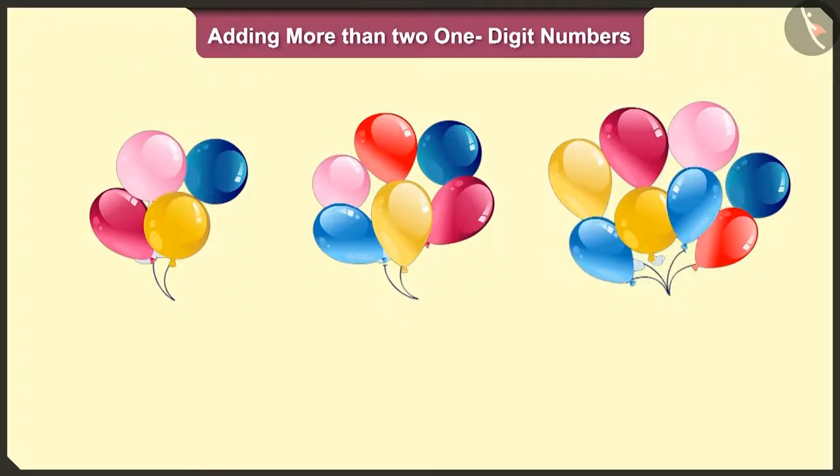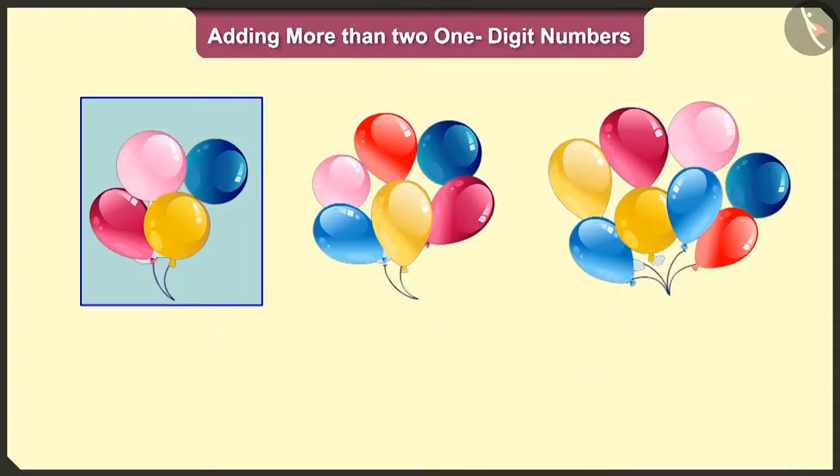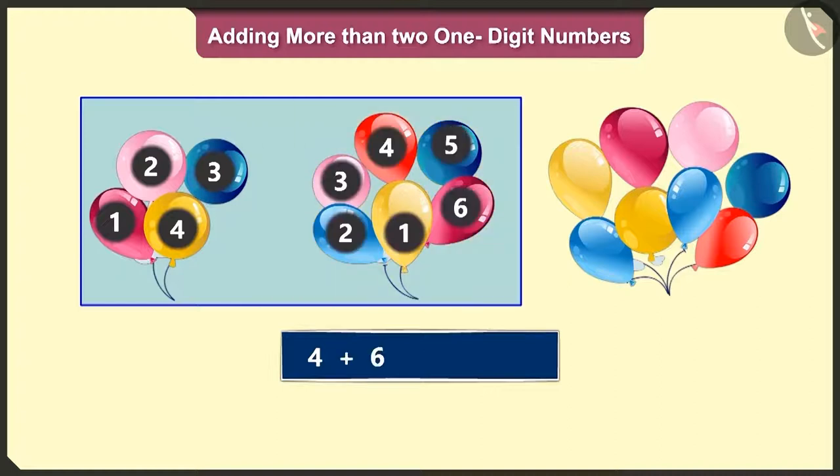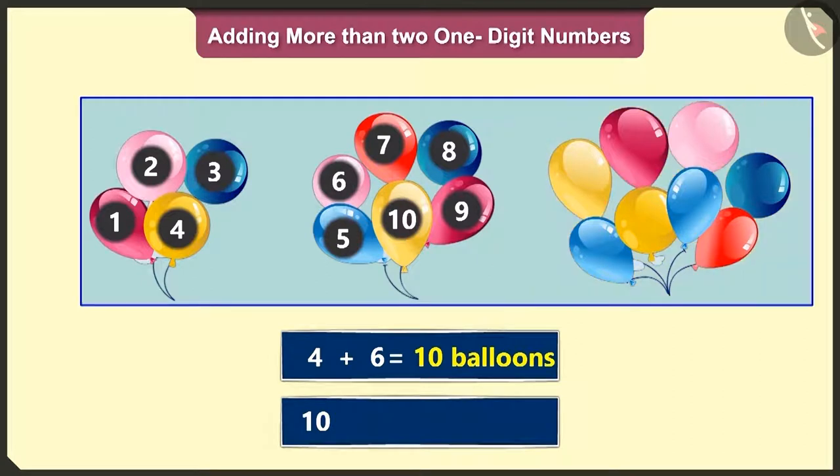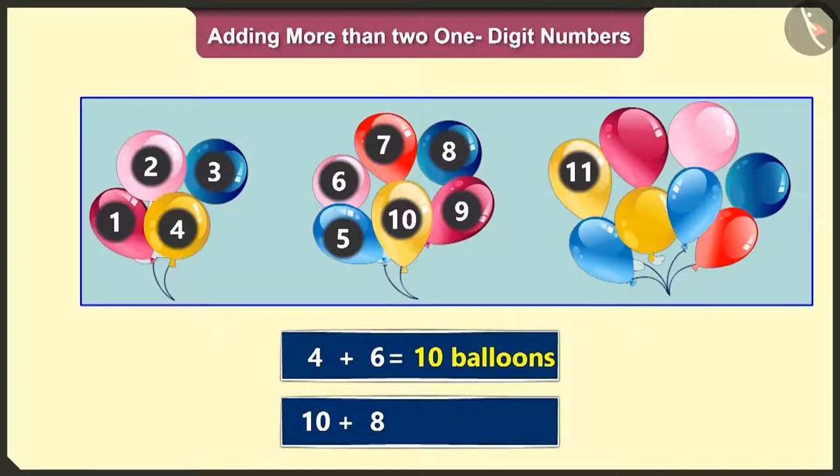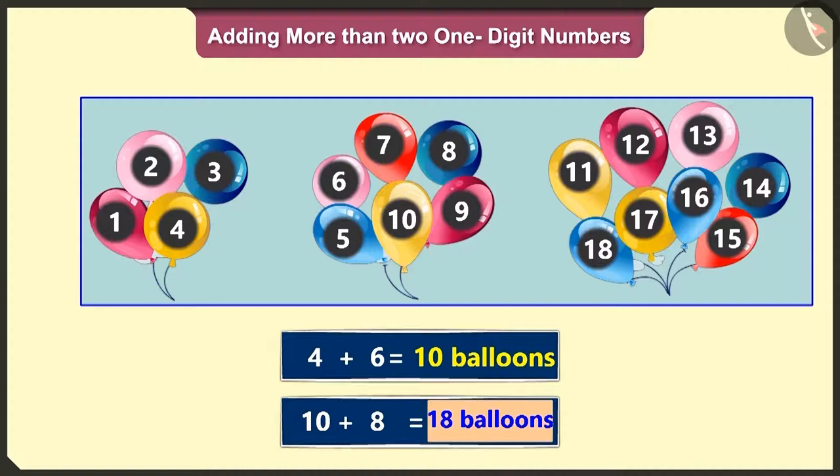Okay, so now tell me how many balloons are there in total? If we add four balloons of the first group to six balloons of the second group, then count after four will be five, six, seven, eight, nine, and ten balloons. To these, we add eight balloons of the third group. Then after ten count, eleven, twelve, thirteen, fourteen, fifteen, sixteen, seventeen, and eighteen balloons is what we have. So the total number of balloons is eighteen.